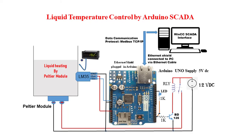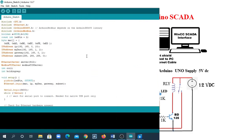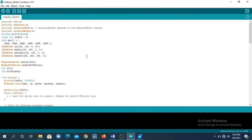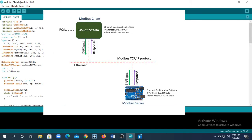As Arduino works on Modbus protocol for transmitting input-output data to the SCADA interface, you have to upload the Modbus library to the Arduino, which will make Arduino communicate with the SCADA interface over Modbus protocol. If we proceed to look at the coding for Arduino, we will see that Modbus TCP/IP has been used as the data communication protocol.